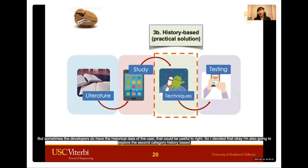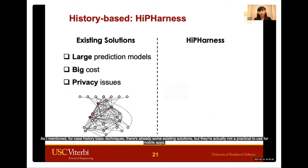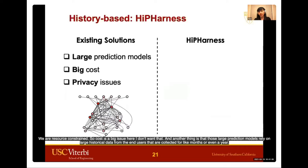Sometimes developers do have historical user data that could be useful, so I also explored the second category: history-based. Existing solutions are not practical for mobile apps because they rely on very large prediction models, and running those is really costly on mobile devices, which are resource-constrained. Another issue is that those large models rely on large historical data collected over months or even a year, which introduces significant privacy concerns. So I didn't want either of those problems.